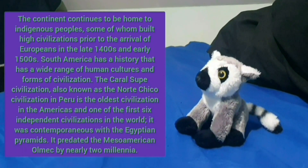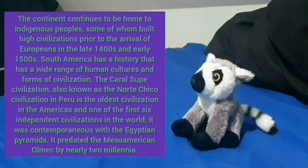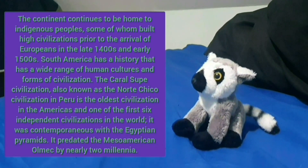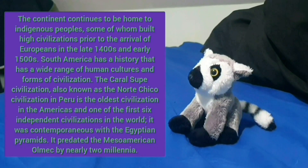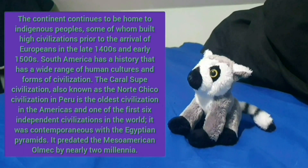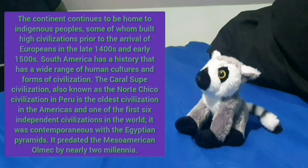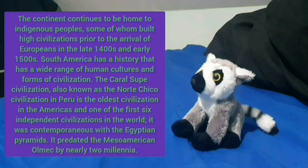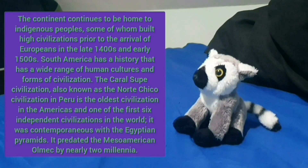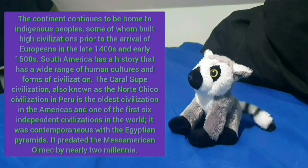The continent continues to be home to indigenous peoples, some of whom built high civilizations prior to the arrival of Europeans in the late 1400s and early 1500s. South America has a history with a wide range of human cultures and forms of civilization. The Caral-Supe civilization, also known as the Norte Chico civilization in Peru, is the oldest civilization in the Americas and one of the first six independent civilizations in the world. It was contemporaneous with the Egyptian pyramids and predated the Mesoamerican Olmec by nearly two millennia.